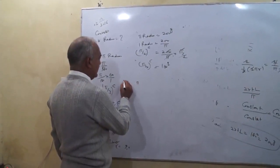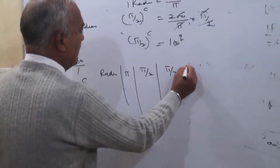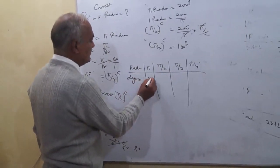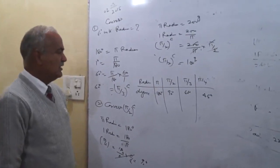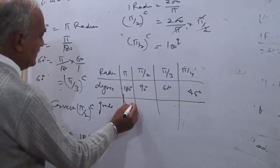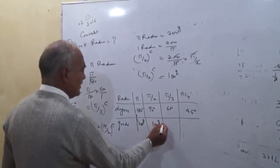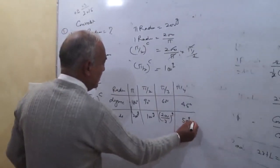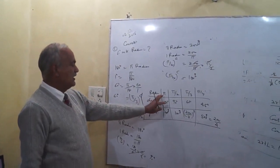Here is a summary table of radian, degree, and grade equivalents. Pi radian equals 180 degrees equals 200 grade. Pi by 2 equals 90 degrees equals 100 grade. Pi by 3 equals 60 degrees equals 200 by 3 grade. Pi by 4 equals 45 degrees equals 50 grade.